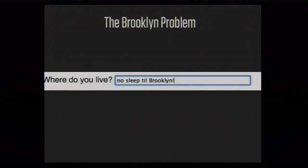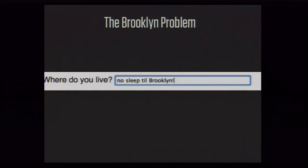We are using ambient data to solve that problem. We have this form on the screen that asks, where do you live? This answer has been given to us 47 times — "no sleep till Brooklyn" — and it doesn't geocode well. Where it geocodes to is Brooklyn, Alabama. If you say "no sleep till Brooklyn," we're going to assume you live somewhere in southern Alabama. This is what we call the Brooklyn problem.